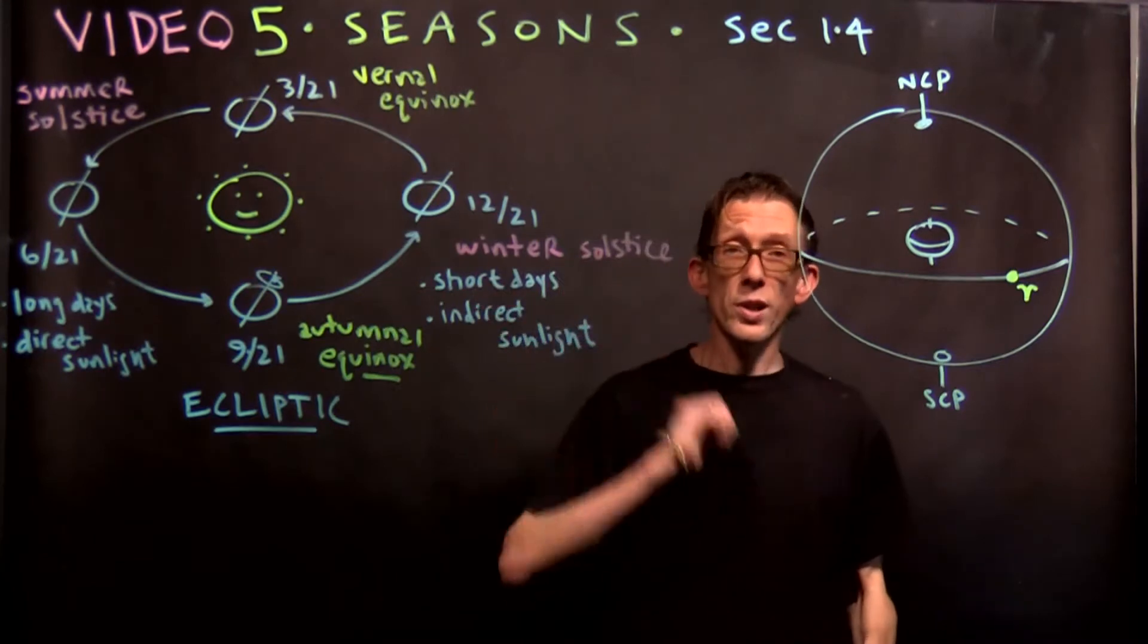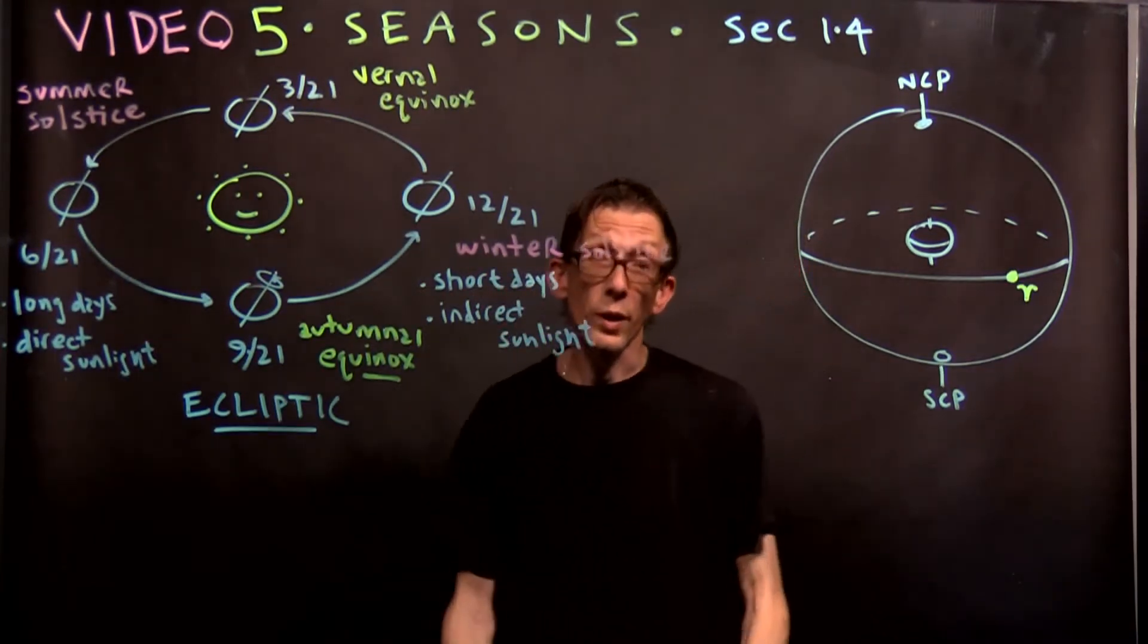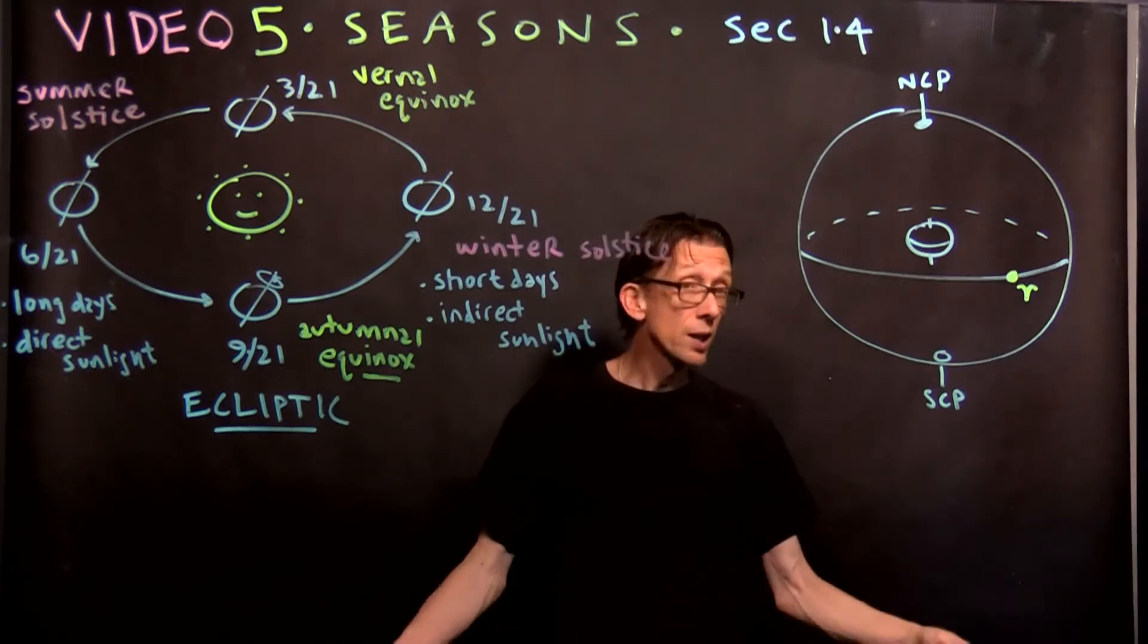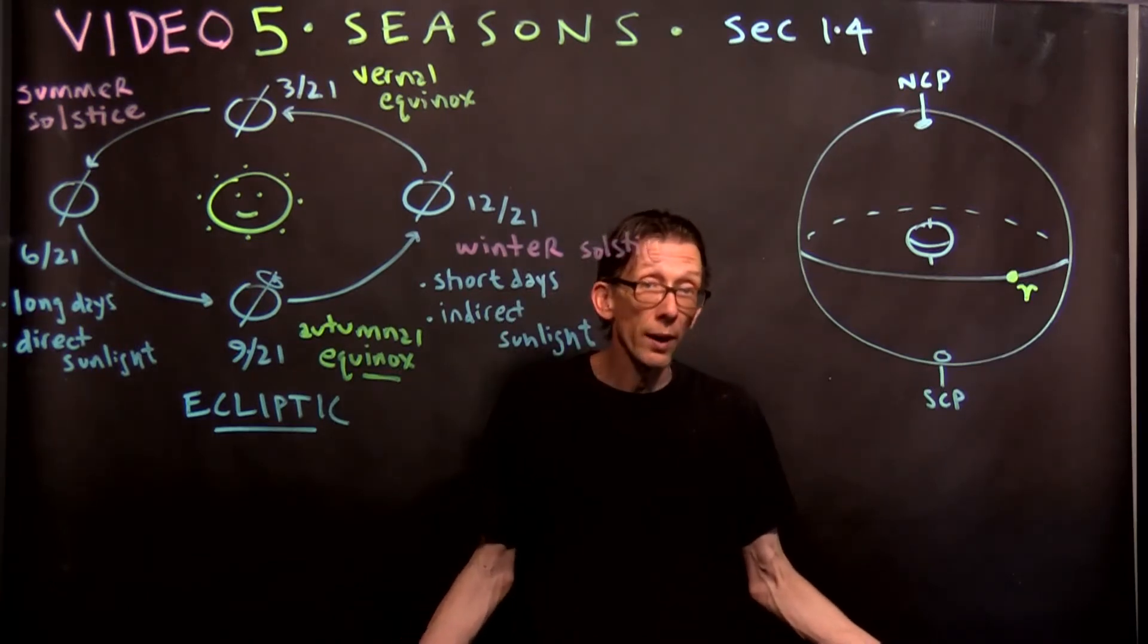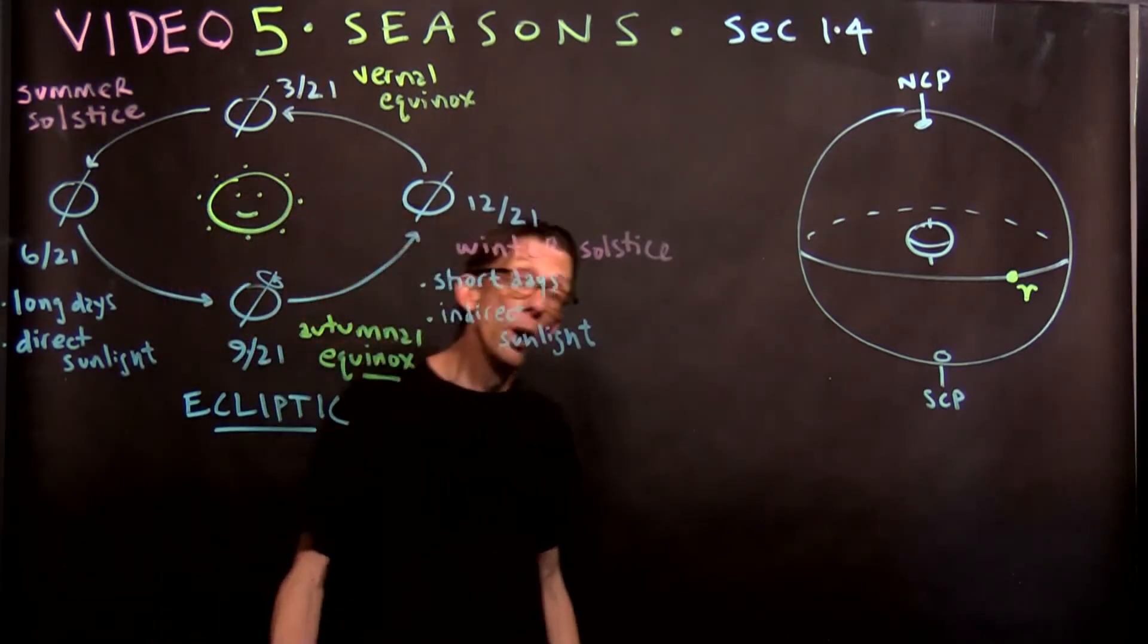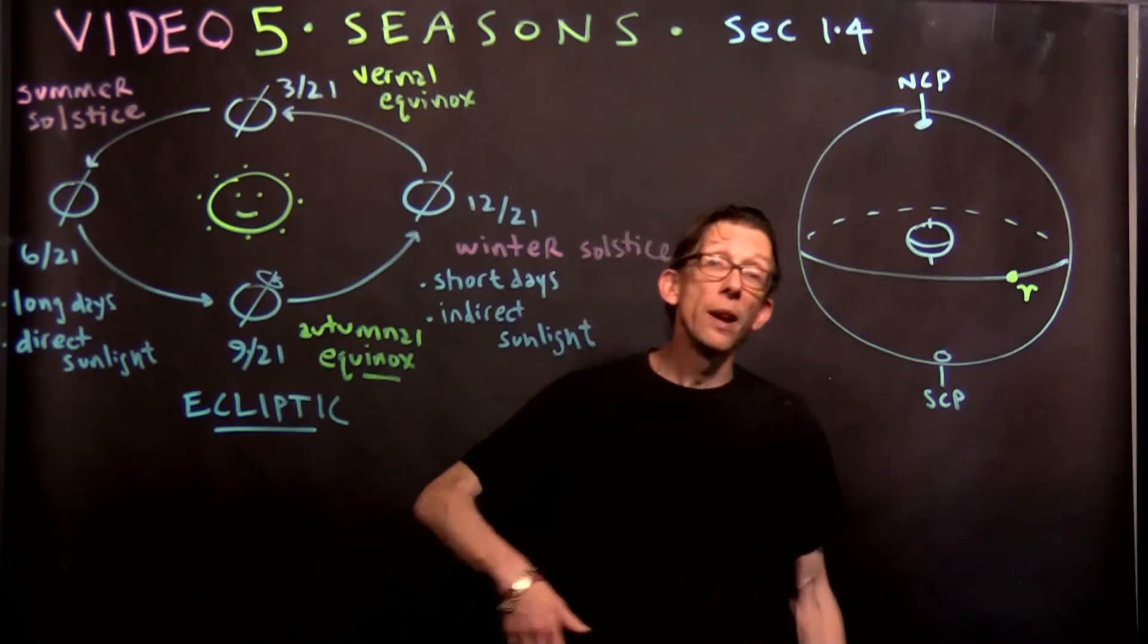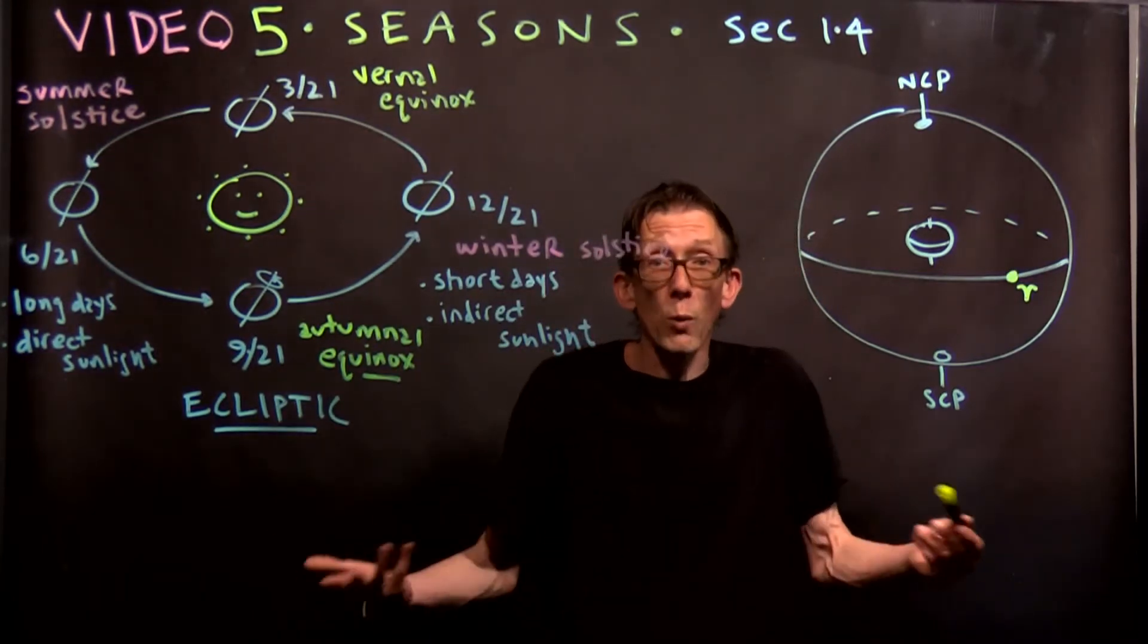Winter solstice, shortest day of the year, longest night of the year, and indirect sunlight. So it gets cold. The sun's up less time and when it is up, it's less direct. In the summer, 6/21, the longest day of the year, the shortest night of the year, the sun is up longer. And when it is up, it's more direct. So we get more heat.